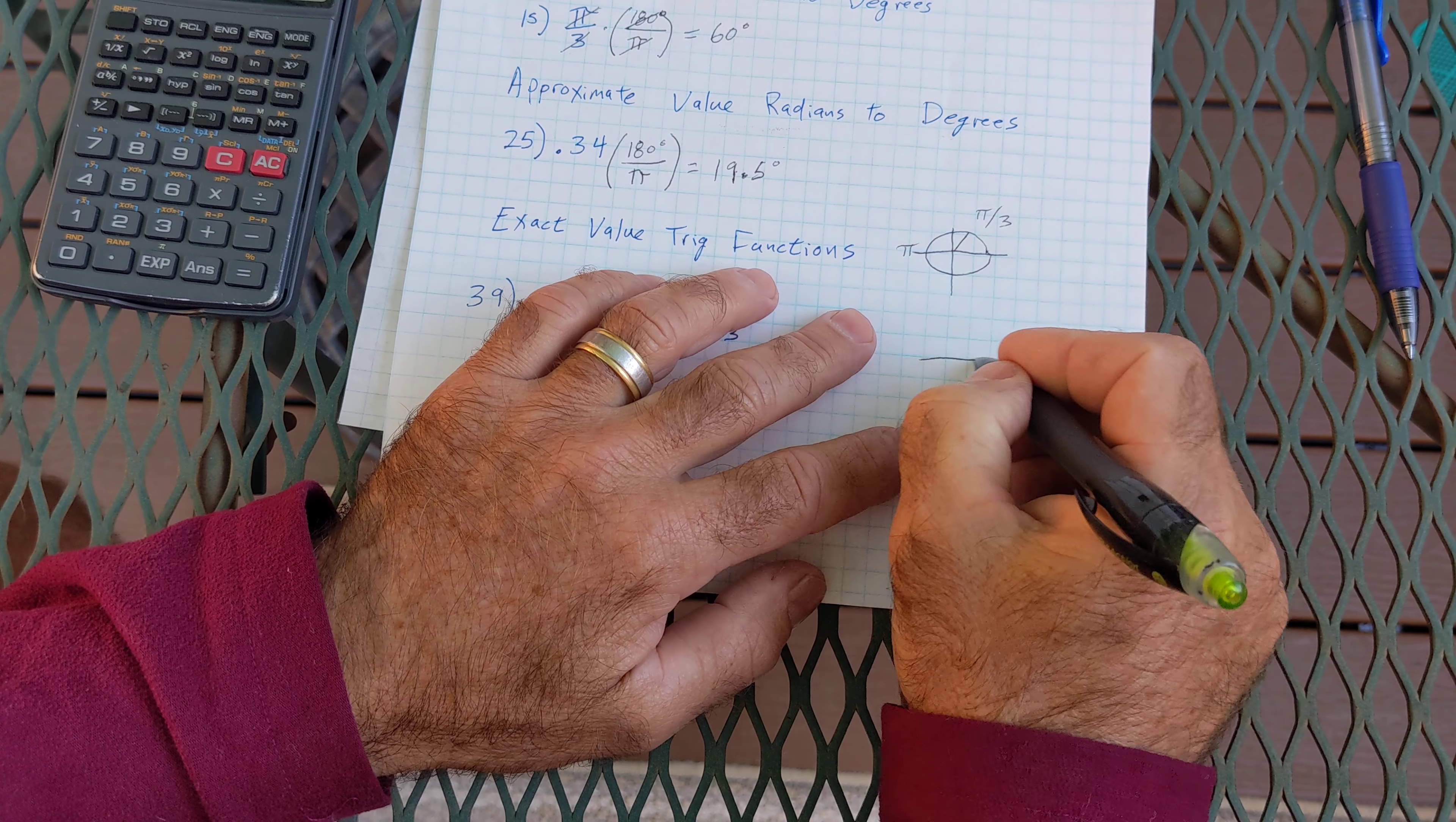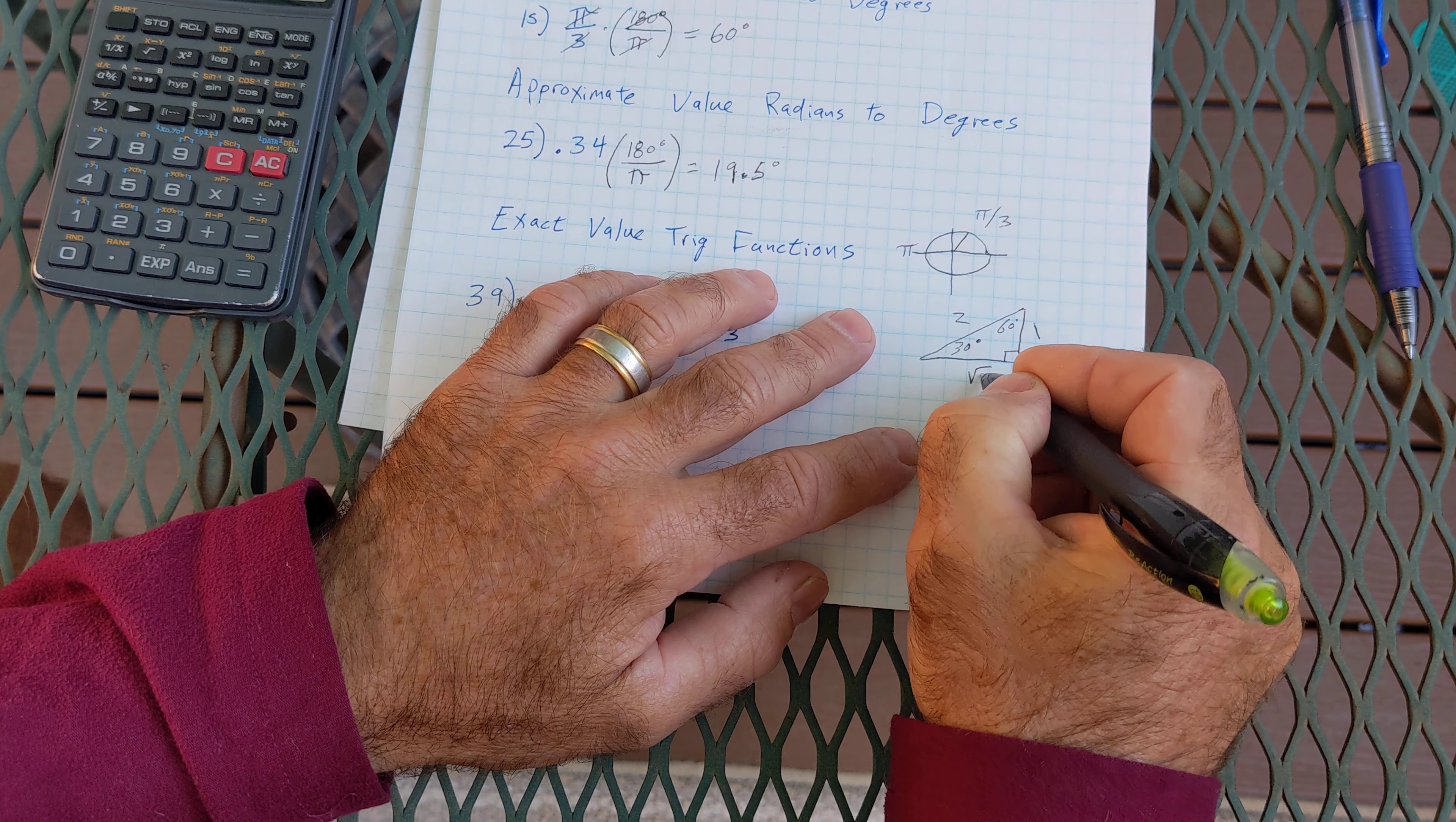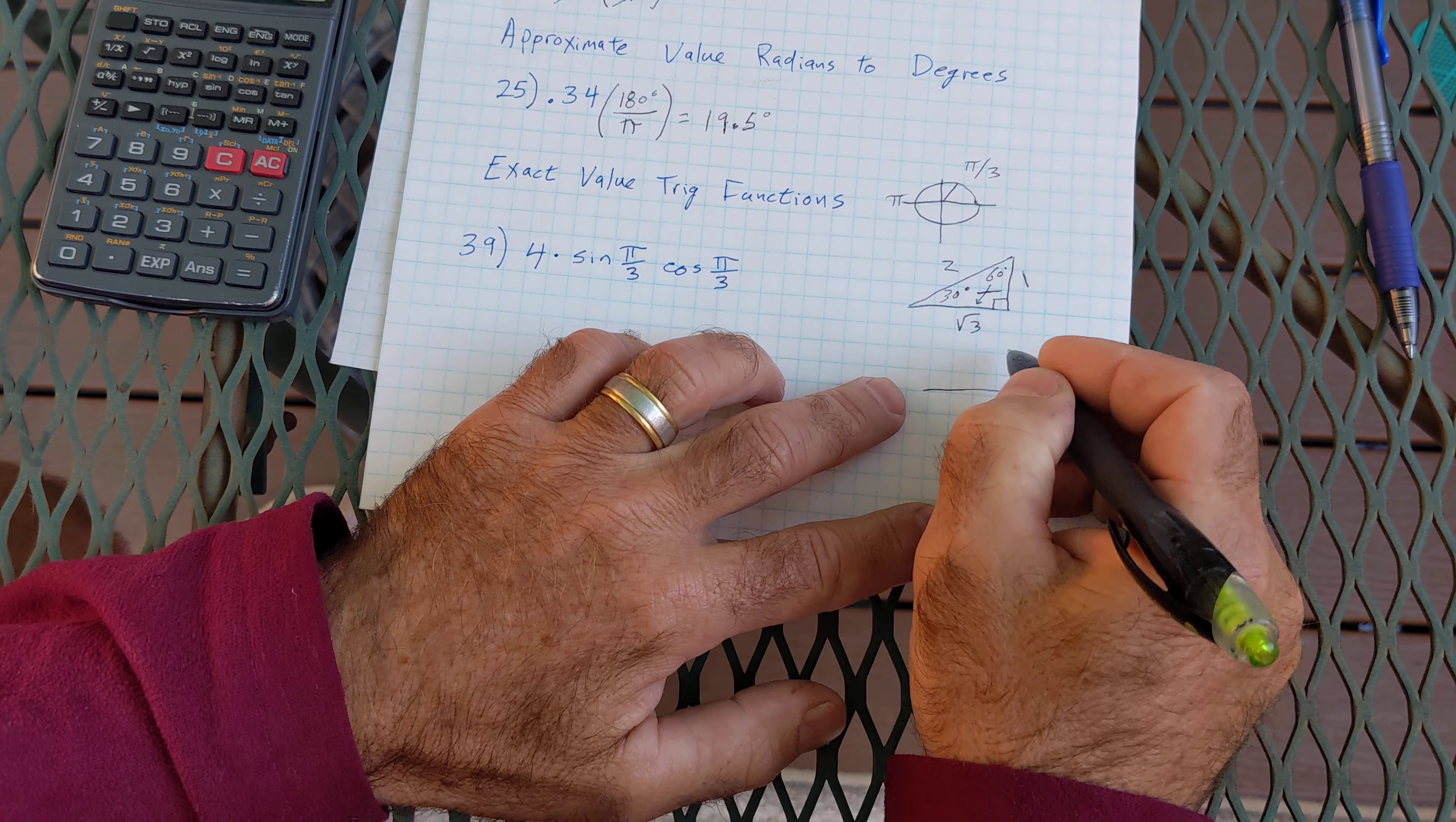So remember, here's a 30-60-90. On a 30-60-90, the ratios of sides will always be in the ratio of 1 to 2 to root 3. Remembering opposite 30 is 1, opposite 60 is root 3. Hypotenuse is 2.